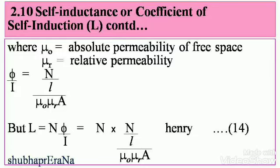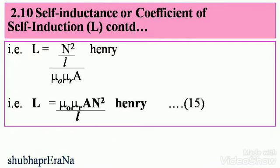From the first method, L = Nφ/I. Substituting the value of φ/I, we can write L = N × N / (l / (μ₀μᵣA)) Henry. This is Equation 14. Therefore, L = μ₀μᵣAN² / l Henry. This is Equation 15, the second method to calculate self-inductance.